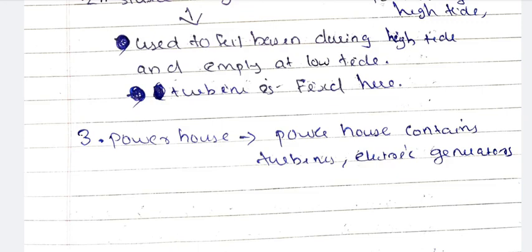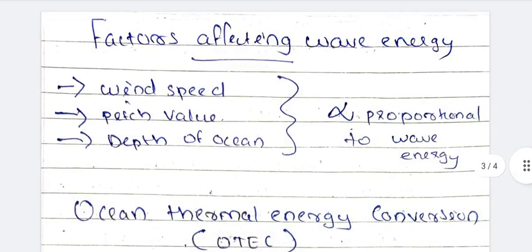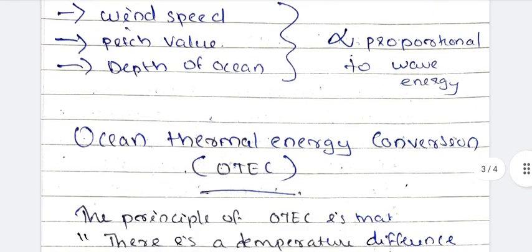I'll show you the factors affecting wave energy. In wave energy, the factors affecting it are wind speed, pitch value, and depth of the ocean. This relation is directly proportional. Wave energy is directly proportional to wind speed, pitch value, and ocean depth.